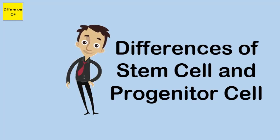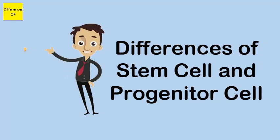Similarities: Both stem cells and progenitor cells have the potential to differentiate into a specific type of cell.